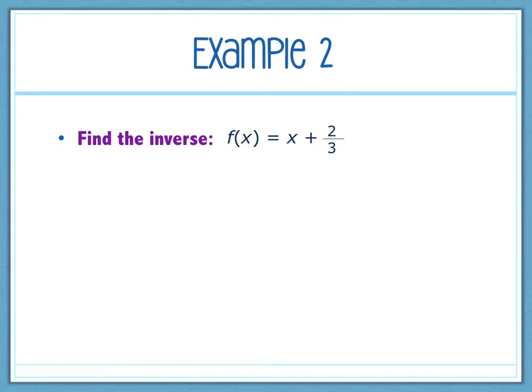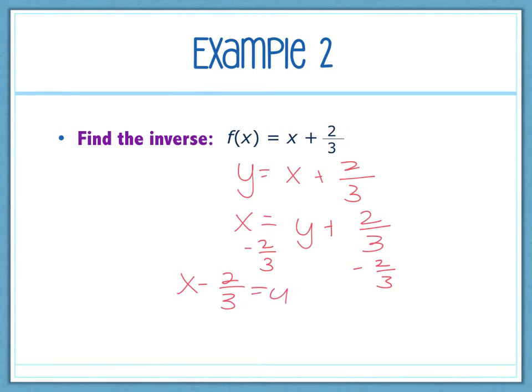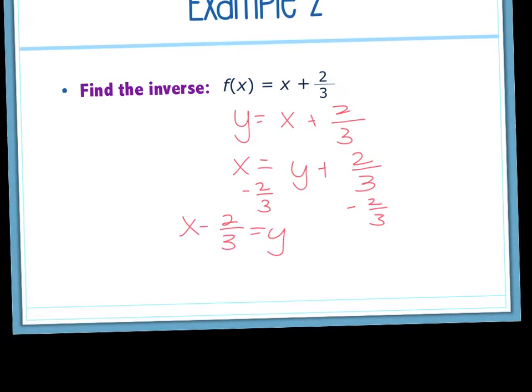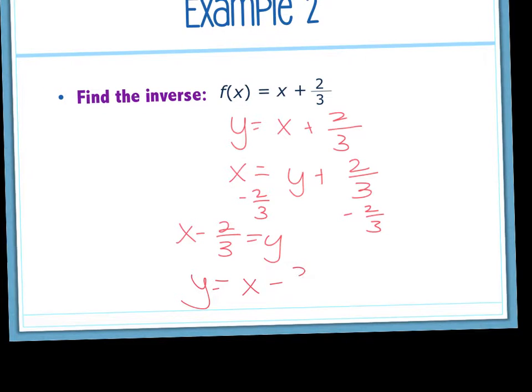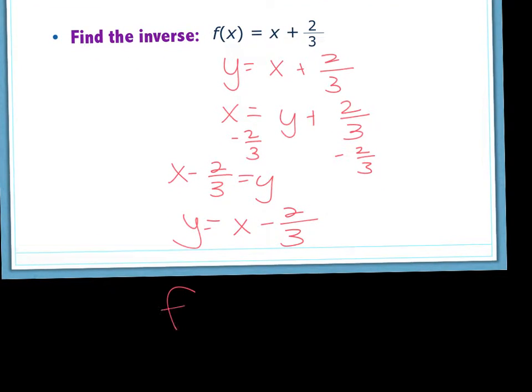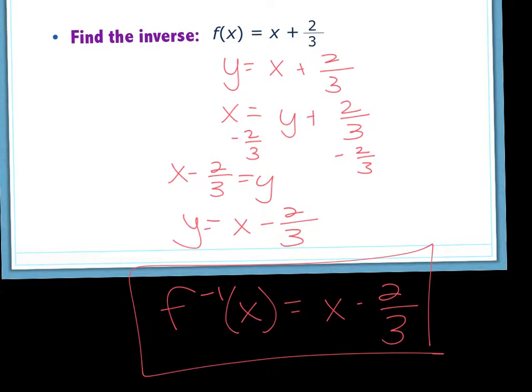Alright. So if f of x becomes y, then I switch the x and the y. And then I want to get y by itself. How do I do that? Subtract that 2 thirds from both sides. So x minus 2 thirds equals y. Just going to switch it so the y is on the left. And then f negative 1 of x equals x minus 2 thirds. Raise your hand if you've got it right. Good. Questions if you didn't?